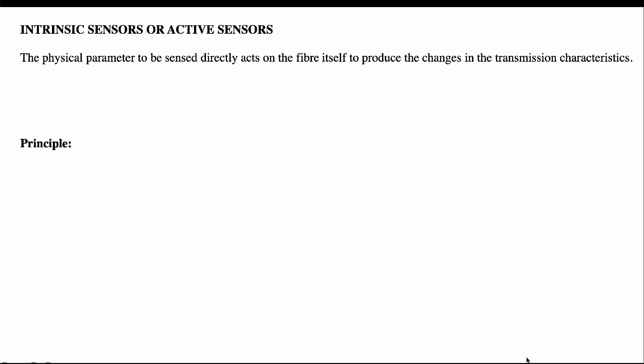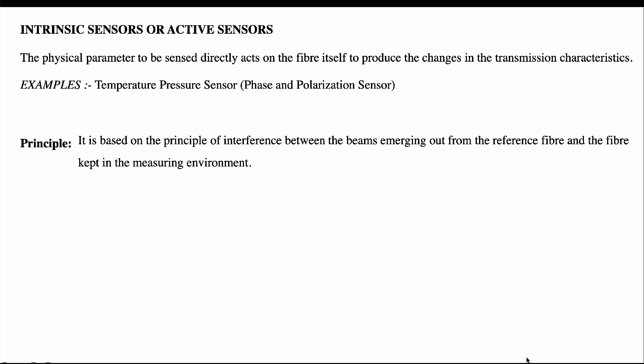We are starting with intrinsic sensors, also called active sensors. Intrinsic sensors are based on a physical parameter directly acting on the fiber itself to produce changes in the transmission characteristics. Examples include phase or polarization sensors — for example, temperature and pressure sensors. The principle followed is interference between the beams emerging out from a reference fiber and the fiber kept in the environment.